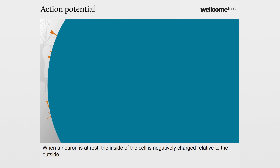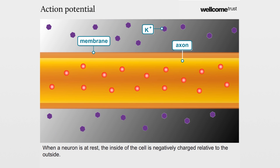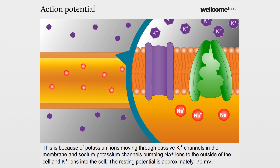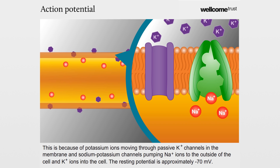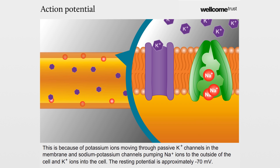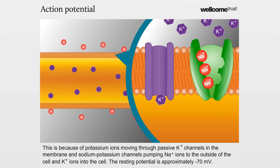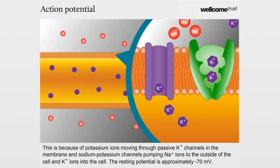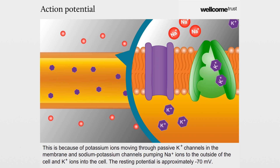When a neuron is at rest, the inside of the cell is negatively charged relative to the outside. This is because of potassium ions moving through passive potassium channels in the membrane and sodium-potassium channels pumping sodium ions to the outside of the cell and potassium ions into the cell. The resting potential is approximately minus 70 millivolts.